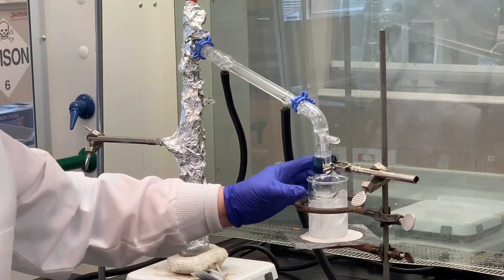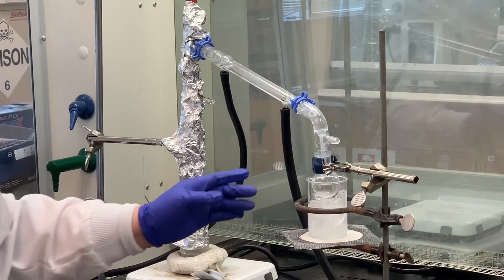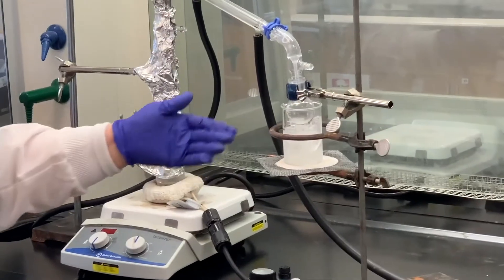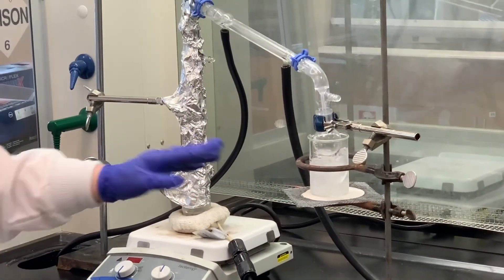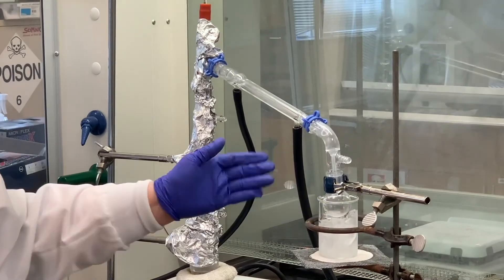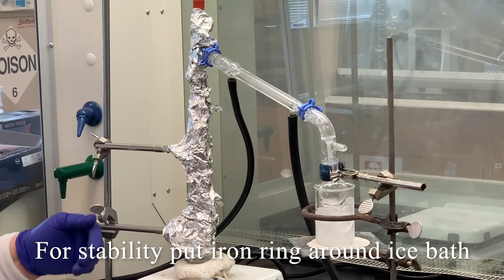I went ahead and put a beaker containing ice underneath the receiving flask. That ice will probably melt some before we start distilling, and I can replenish that as necessary. One thing I always like to do if I do have an ice water bath that I'm using in any type of apparatus, especially with some type of distillation...